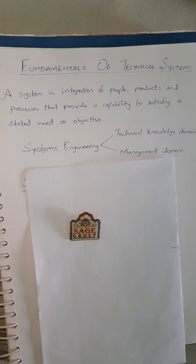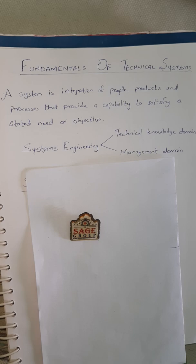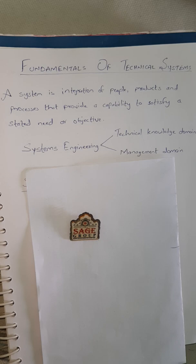Systems engineering is an interdisciplinary approach that encompasses the entire technical effort and evolves into and verifies an integral and life cycle balanced set of system, people, product, and processes solution that satisfies the customer needs. Another definition: systems engineering is an interdisciplinary collaborative approach that derives, evolves, and verifies a life cycle balanced system which satisfies customer's expectations and meets public acceptability.